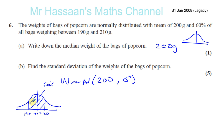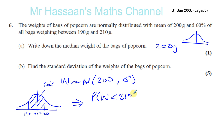So if I think about the probability that the weight is less than 210: that's 30% above the mean up to 210, plus 50% to the left of the mean, which gives 80%, or 0.8. So I know the probability that the weight is less than 210 is equal to 0.8. Now I can work out what value of Z that corresponds to.